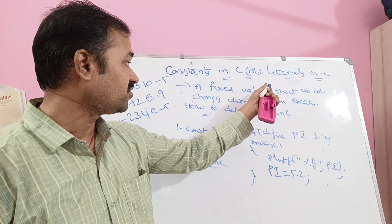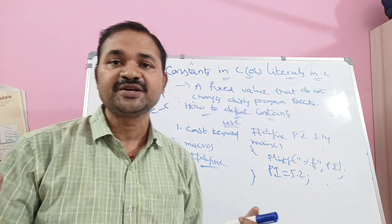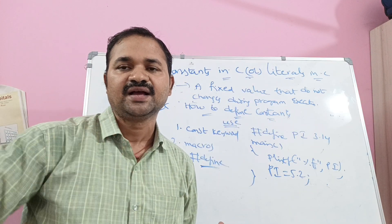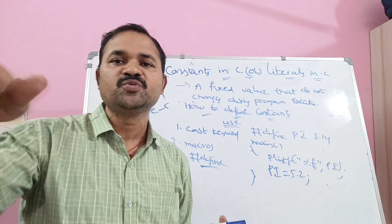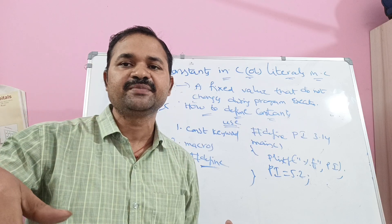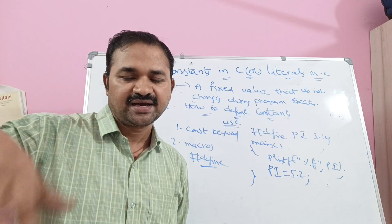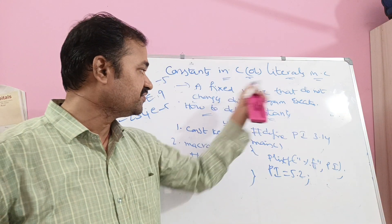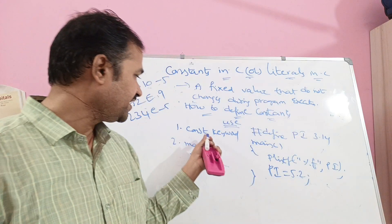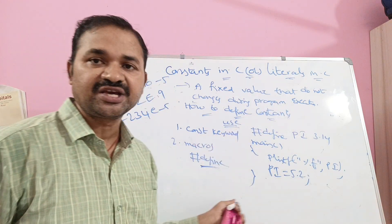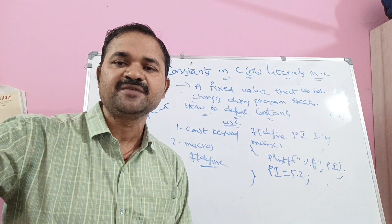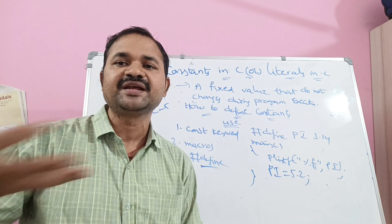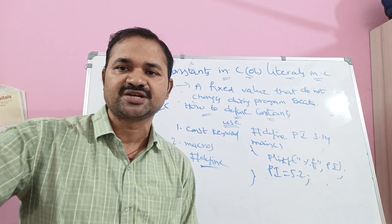So this is about types of constants. Constants are of three types: numeric, character, and string. Numeric constants have two subtypes. Constants can be defined in two ways: first, using the const keyword, and second, using the #define directive.